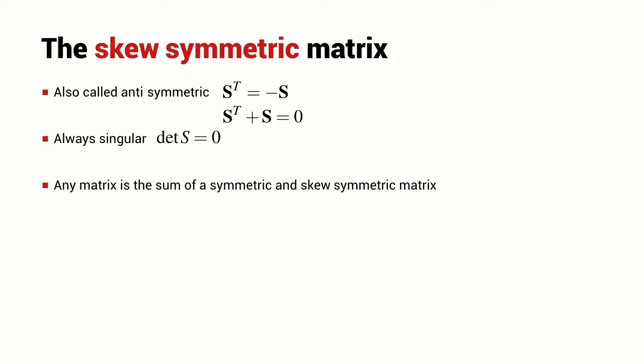Any matrix can be written as the sum of a symmetric matrix and a skew symmetric matrix. In three dimensions, the skew symmetric matrix has this form. It's got a very distinctive zero diagonal and there are only three unique elements in this matrix: x, y and z, and each of them appears with a positive sign and a negative sign.